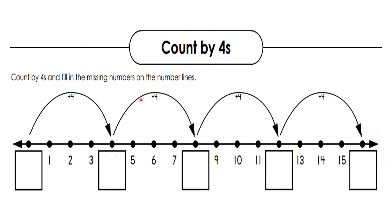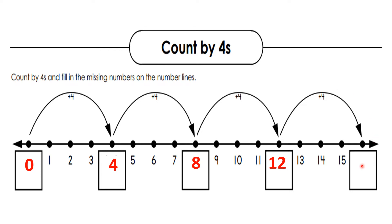Let me explain you counting in 4s by using the number line. You are standing at number 0, and here you will jump by skipping the next 3 numbers — 1, 2, 3 you will skip. Where will you go? Yes, at number 4. Start jumping from number 4 over 5, 6, 7. Where will you go? Yes, you will find number 8. Start jumping from 8 — where will you land? Yes, at number 12. After 12, yes, number 16.